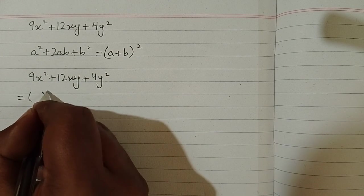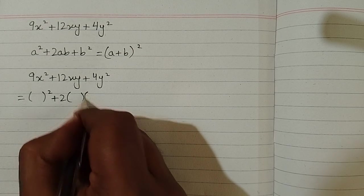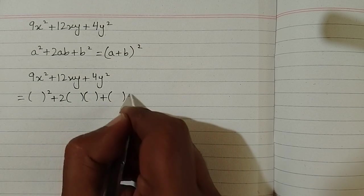So we have a square plus 2ab plus b square.